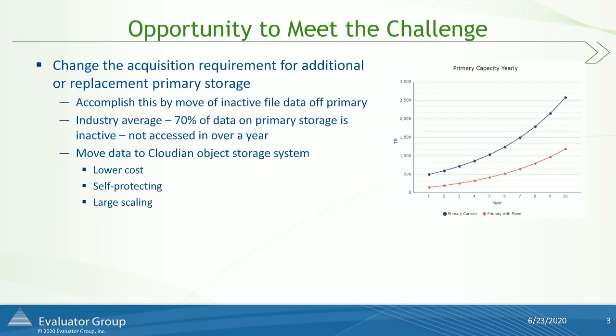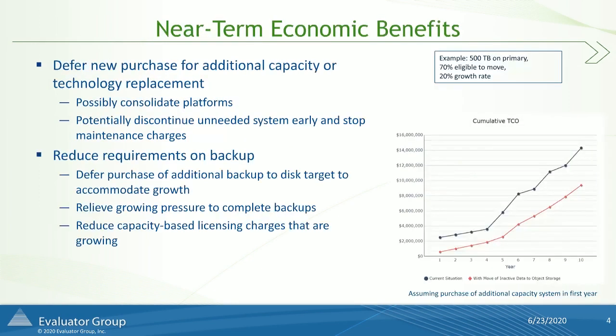Cloudian is one of the examples, and you're going to hear from John a little bit more on the attributes of the Cloudian system as we move forward. It's one that we end up recommending in many of our engagements as a way to reduce these immediate expenses.